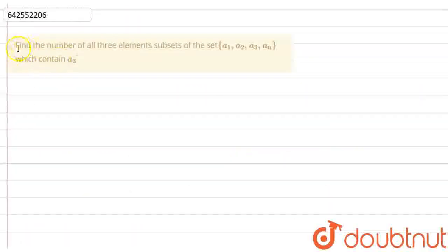Hello everyone, so the question is find the number of all three element subsets of the set A1, A2, A3 up to A9 which contains A3.